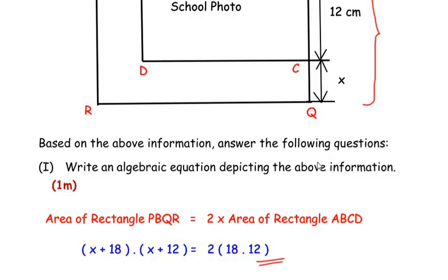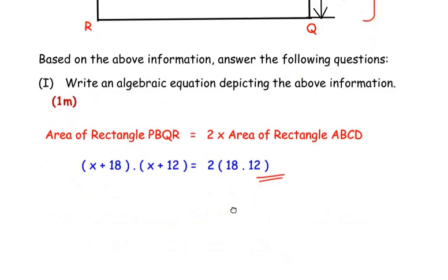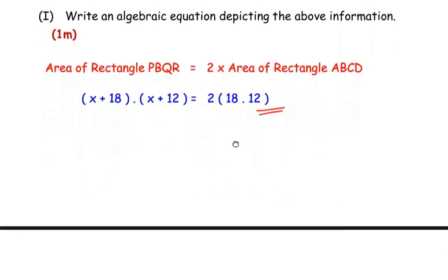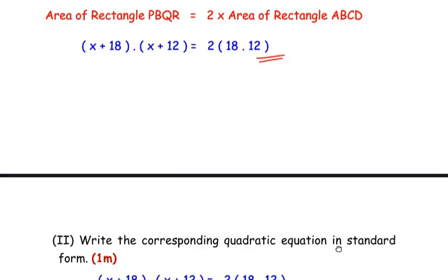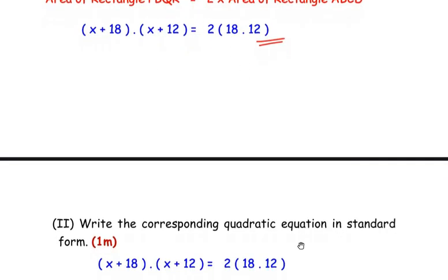Now let us move on to the second question, which is also for one mark: write the corresponding quadratic equation in standard form. The current expression is not in standard form, so we need to convert it. We have (x + 18)(x + 12) = 2 × 18 × 12. Now let us expand the brackets.